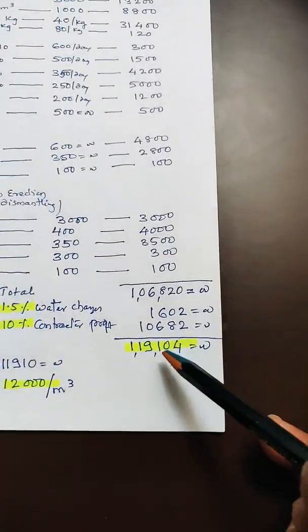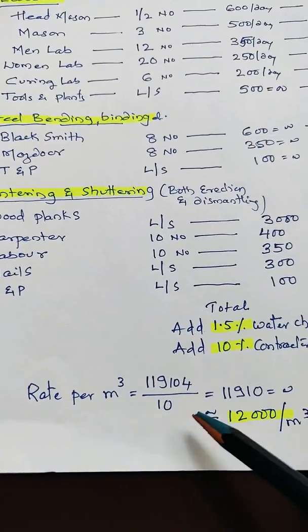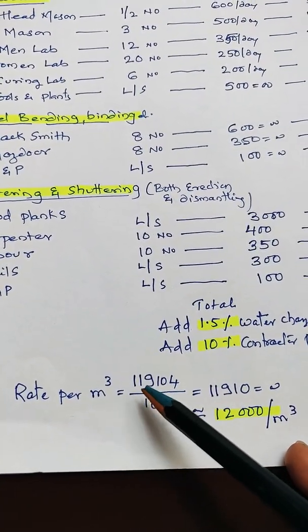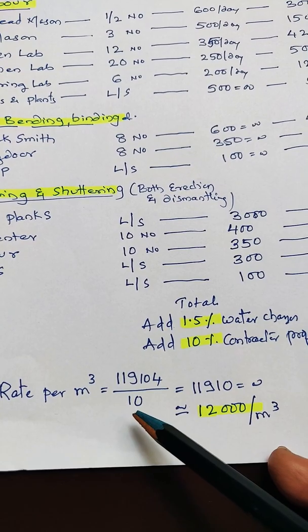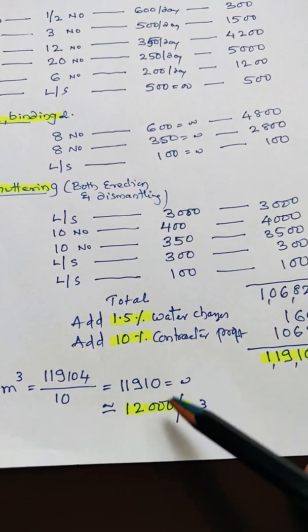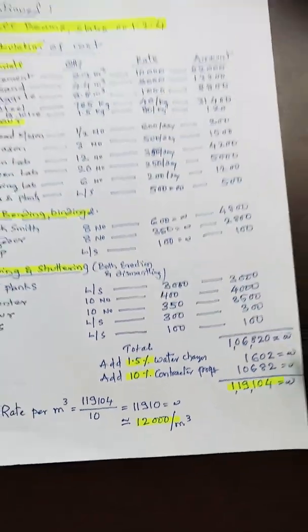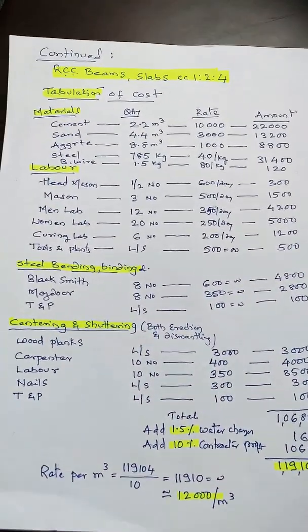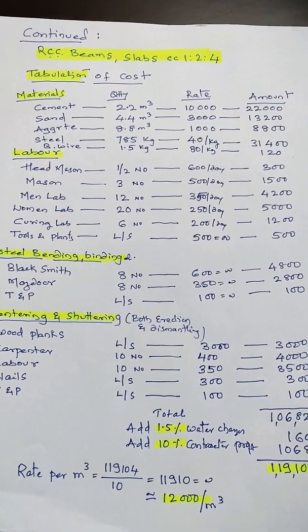This is for 10 meter cube, so we'll calculate for 1 meter cube: 119,000 ÷ 10 = 11,910, roughly around 12,000 per meter cube. This is one example of RCC beams and slabs for 1:2:4 ratio.